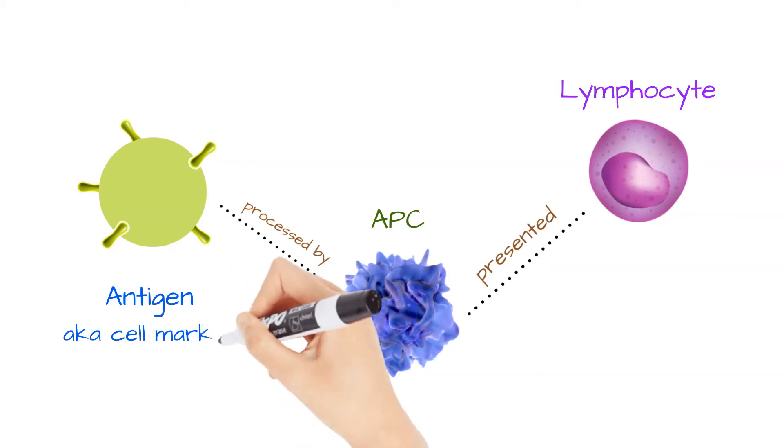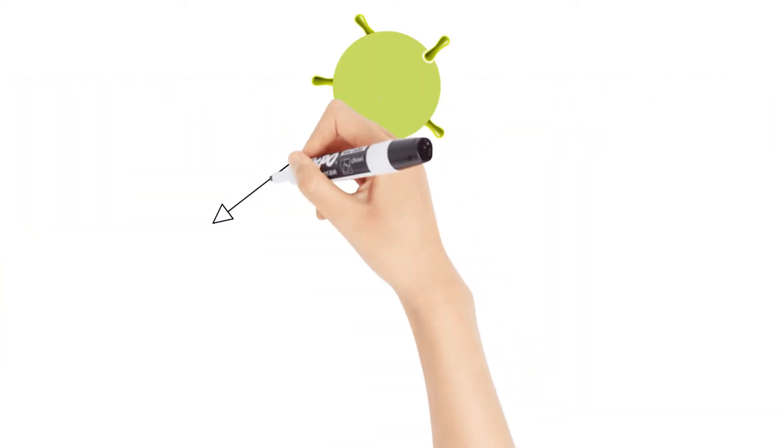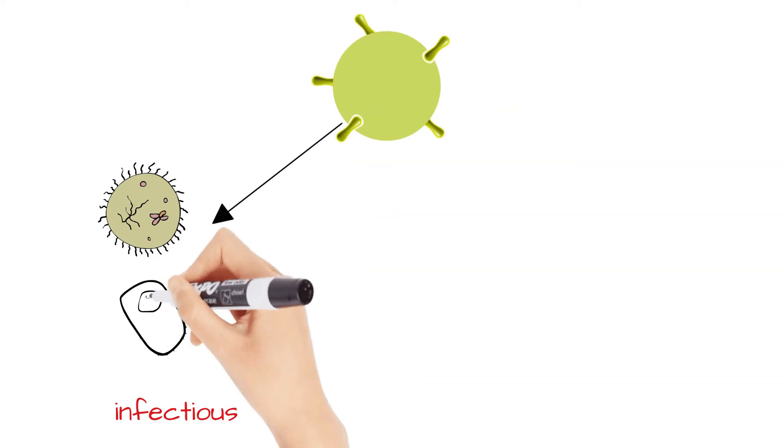They're also known as cell markers. They can be on infectious agents such as viruses, bacteria, fungi, and parasites.